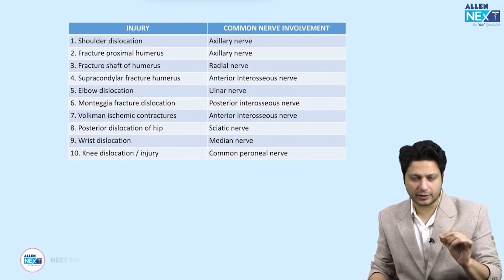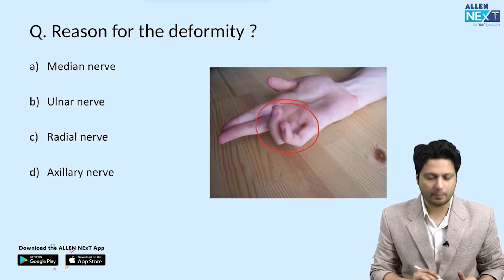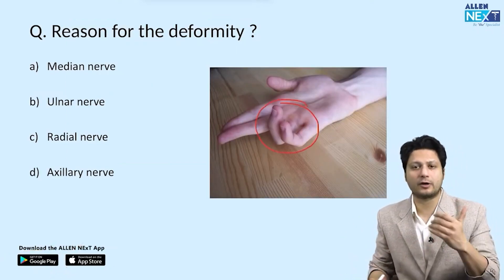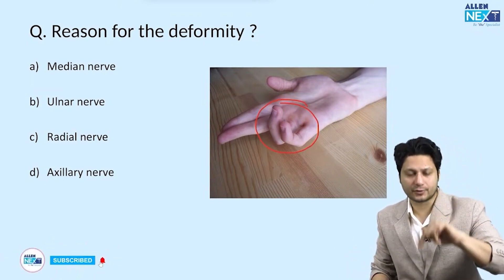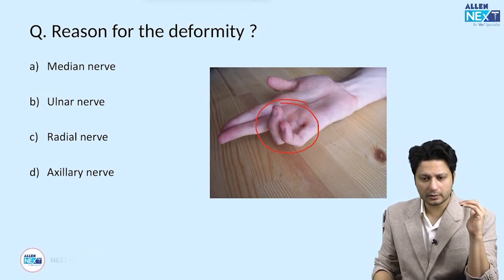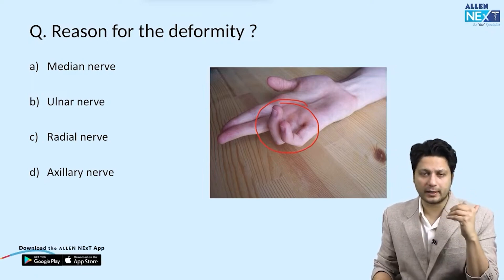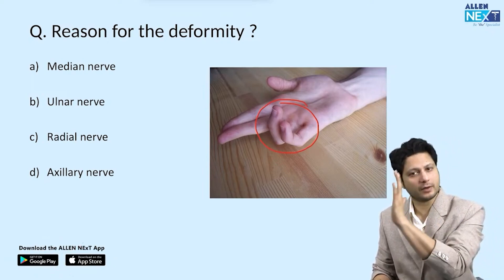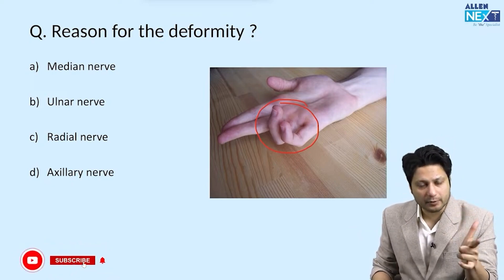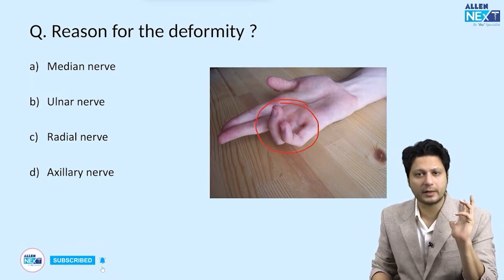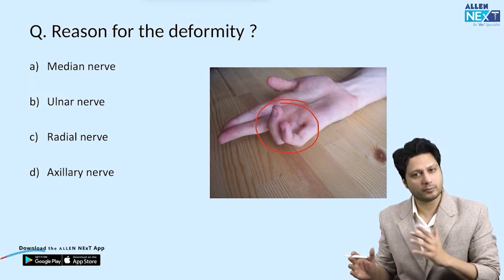For nerve injury identification: a partial claw hand indicates ulnar nerve injury without doubt. The card test, book test, Froment's sign, and claw hand can all be given for identification — mark the answer as ulnar nerve injury. Similarly, the pen test, ape thumb deformity, pointing index, Kiloh-Nevin sign, and benediction sign all point to median nerve injury.